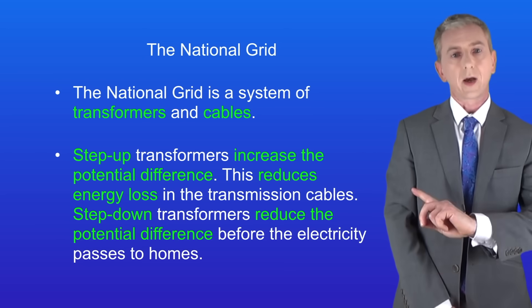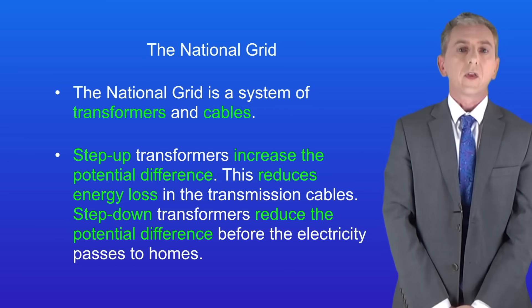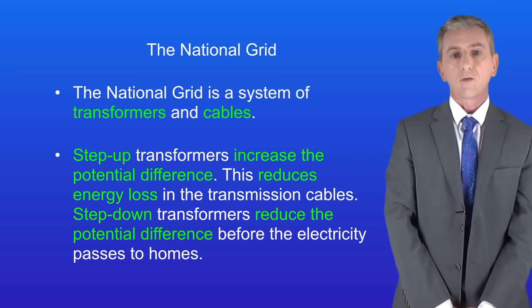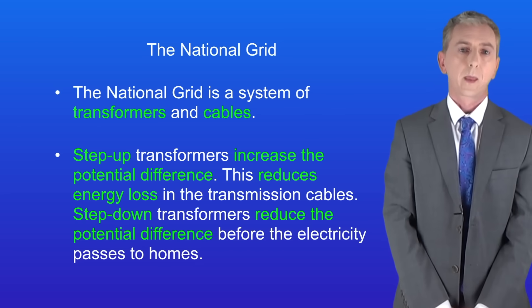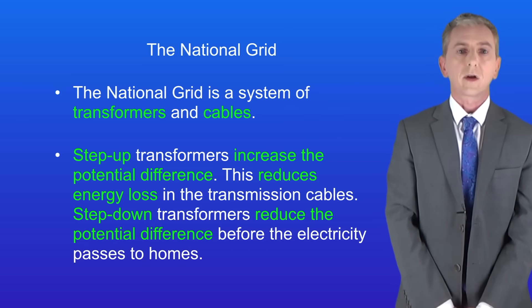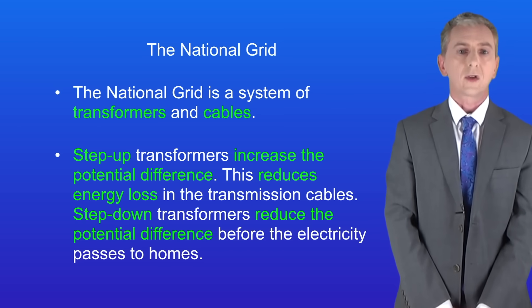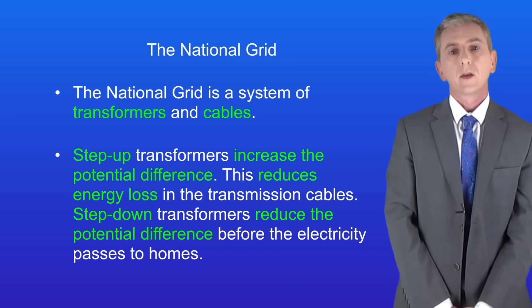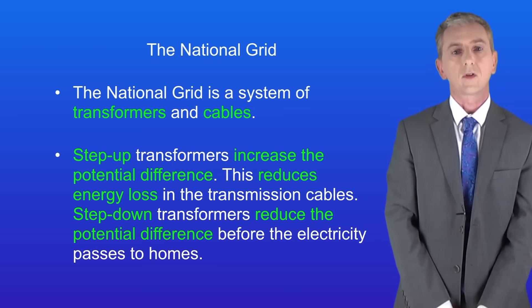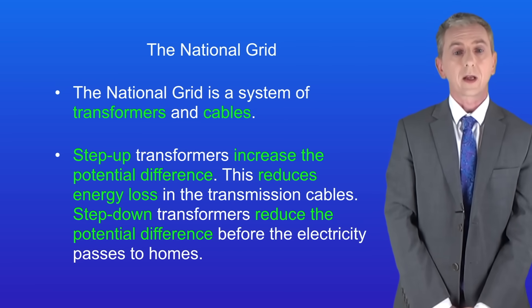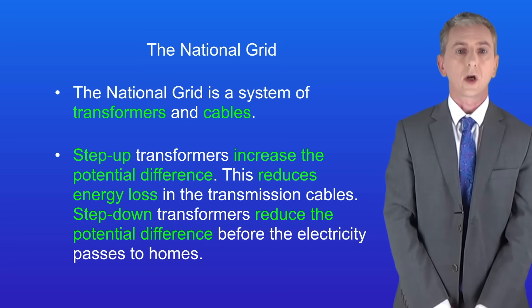Here are the key facts. The national grid is a system of transformers and cables. Step up transformers increase the potential difference, and that reduces energy loss in the transmission cables. Step down transformers reduce the potential difference before the electricity passes to homes.